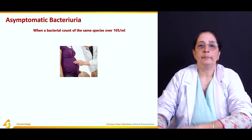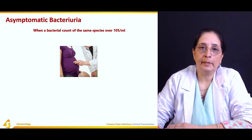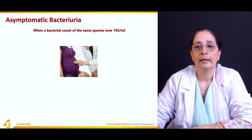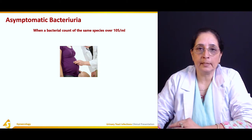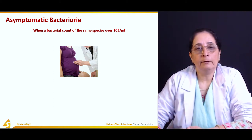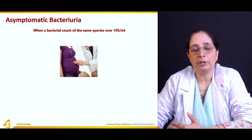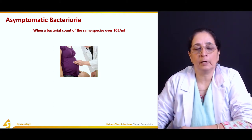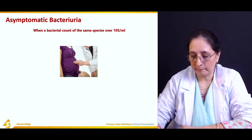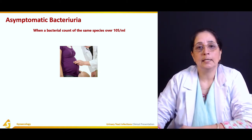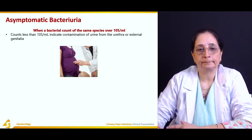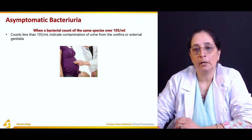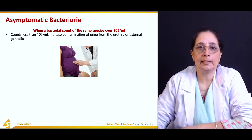Asymptomatic bacteriuria: a patient is labeled as having asymptomatic bacteriuria when the bacterial count is over 10⁵ per ml of urine of the same species. Even when symptoms of urinary tract infection are not present, if the count is above 10⁵ per ml on urinalysis, it is labeled as bacteriuria. A count less than 10⁵ per ml indicates contamination from the urethra or external genitalia.